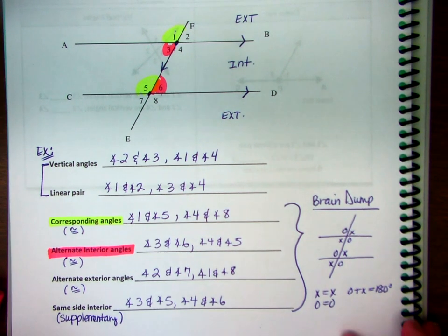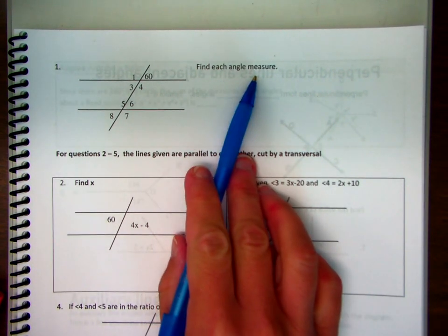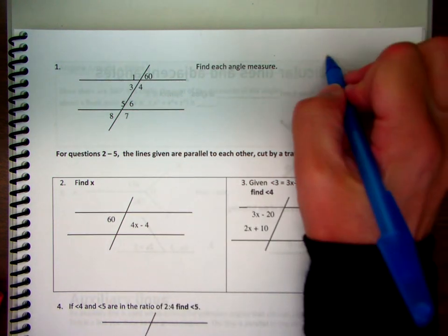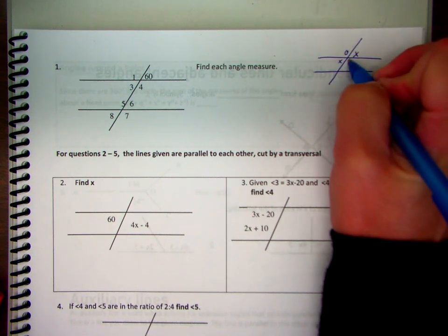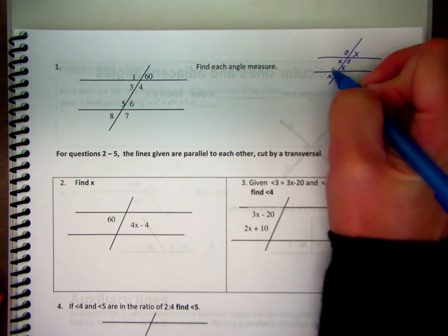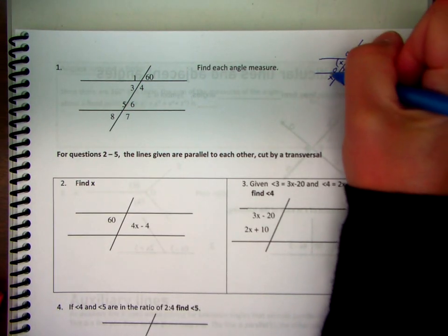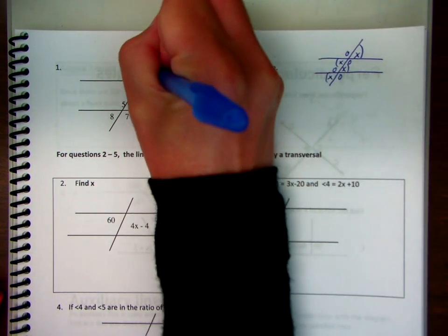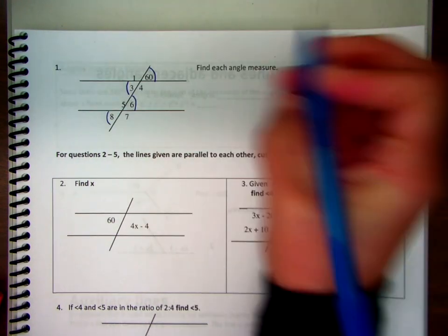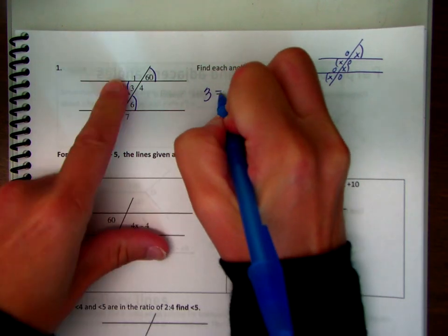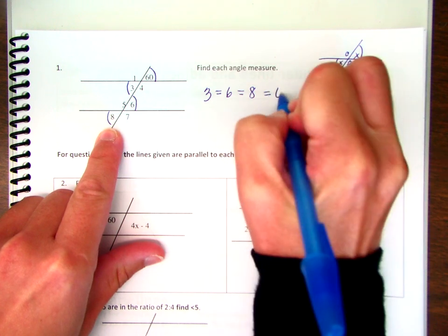Let's look at the next example, which is all numeric — find each angle measure. Using the cheat sheet: every X position is the same measure. So angle three equals angle six equals angle eight, which is 60 degrees. To find the other angles, look at two angles along a straight line — like angle one and 60 — they are supplementary. So 180 minus 60 is 120. Angle one equals angle four equals angle five equals angle seven, which is 120 degrees.